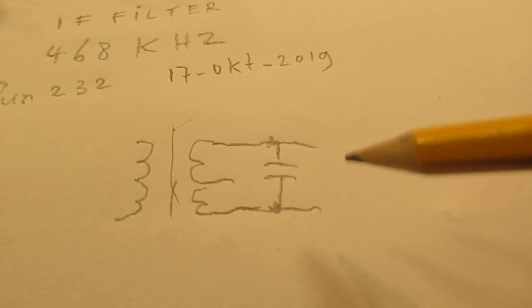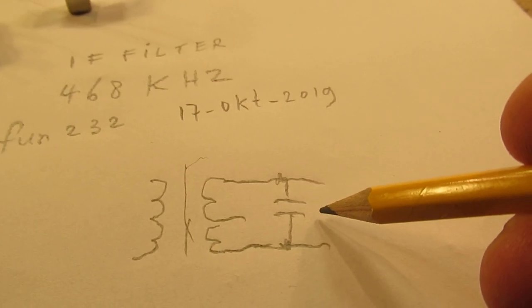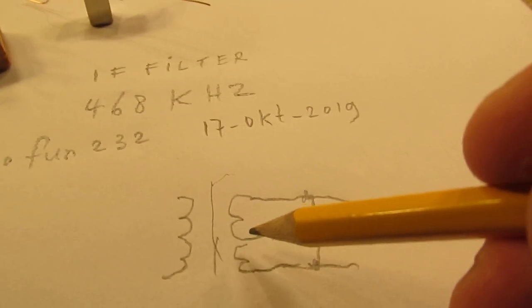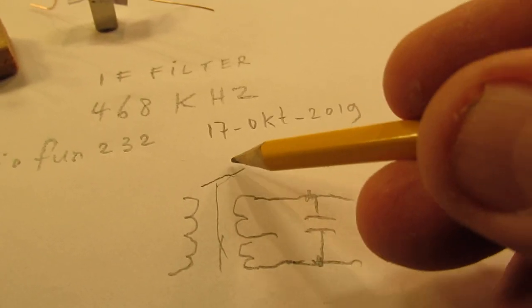Here is often a capacitor of 300 to 400 picofarad. Here is one coil, here the other coil, and here the core that can be tuned.